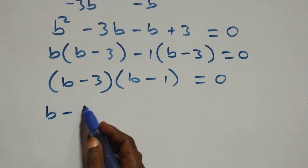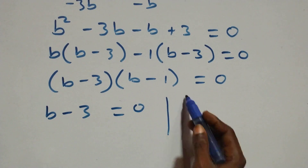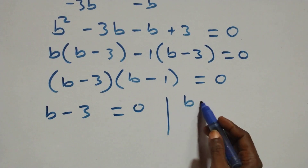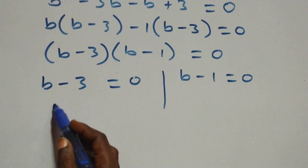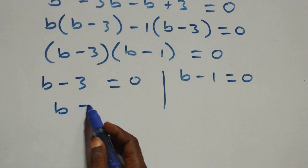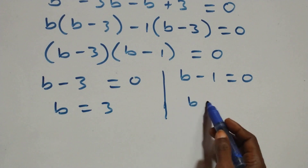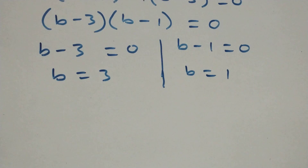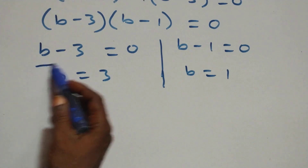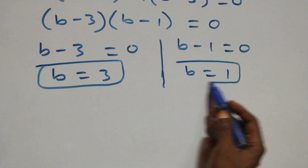Factoring, we get (b minus 3)(b minus 1) equals 0. So either b minus 3 equals 0 or b minus 1 equals 0, giving b equals 3 or b equals 1. We have two possible values of b.